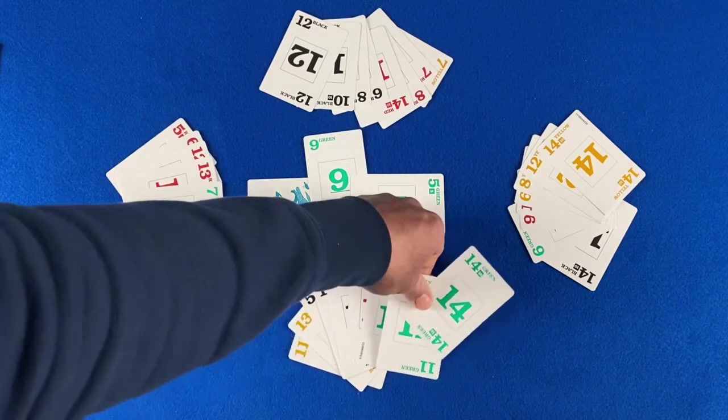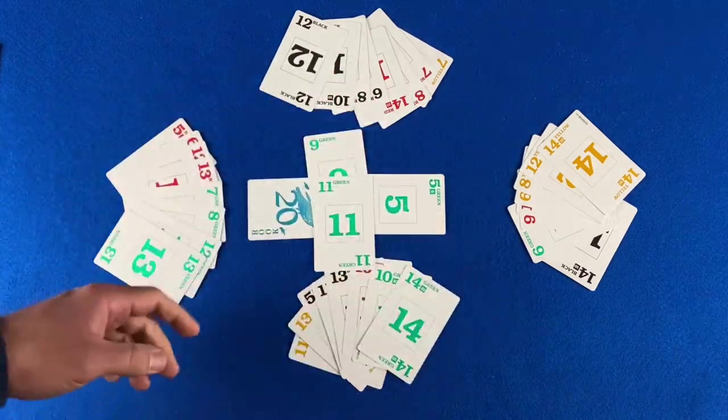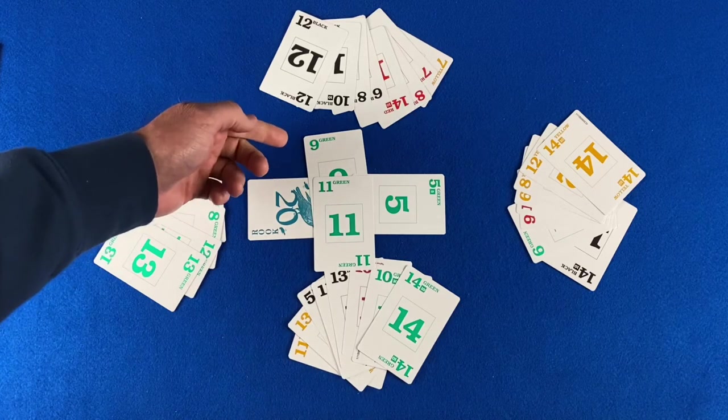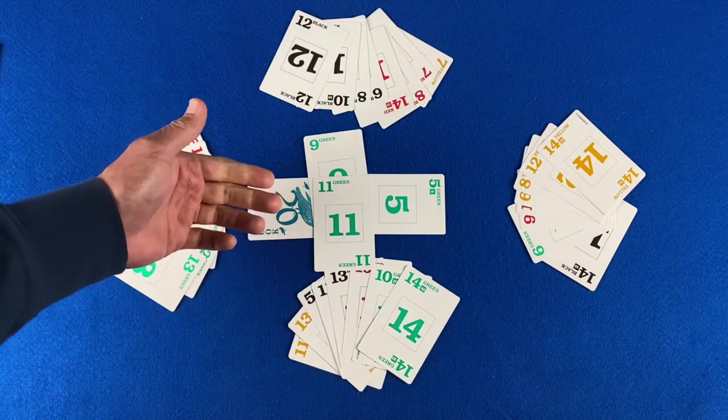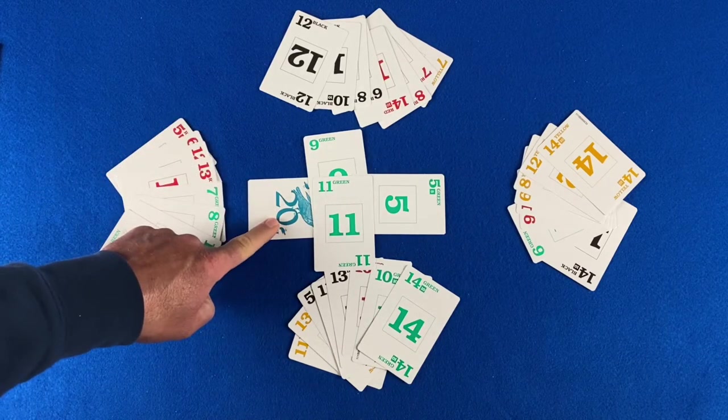And this player must choose between playing another point card or the 11, so they choose to throw out the 11. The highest card in the color that was led, or the highest trump card, takes the trick. For this example, the rook takes the trick.